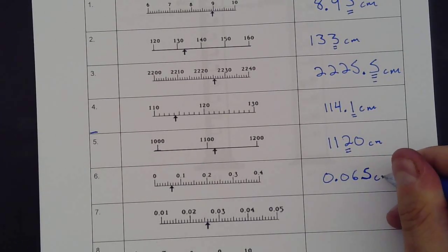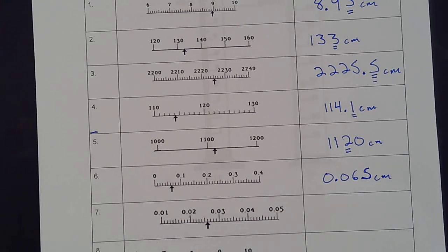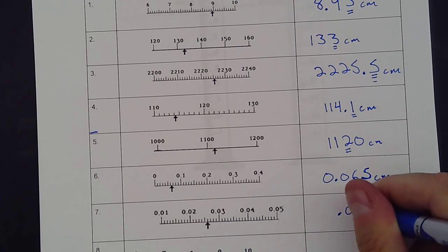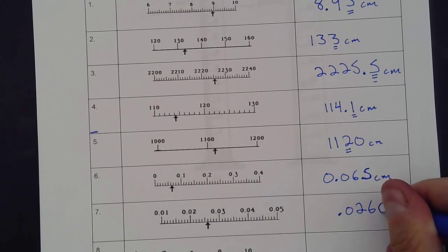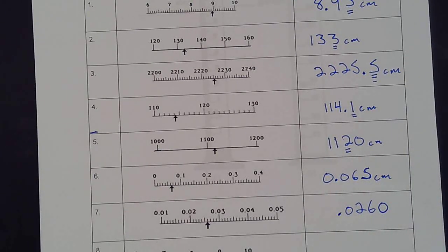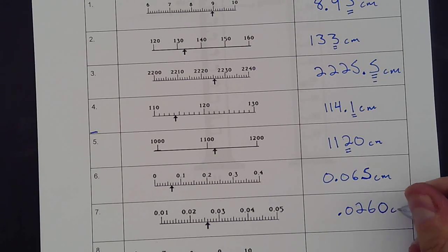And then centimeters. Trying this one out as well, we have 0.01, 0.02. I'm going even further down that scale, so we're increasing the precision of our instrument. So we have 0.02, then 0.021, 0.022, 0.023, 0.024, 0.025, 0.026. I think that's right on there. So 0.0260. Even if I think it's dead on that number, I'm still going to estimate it. I'm still going to put that 0 there.